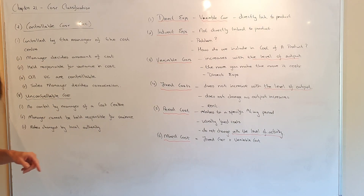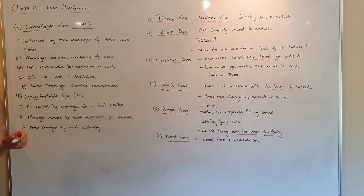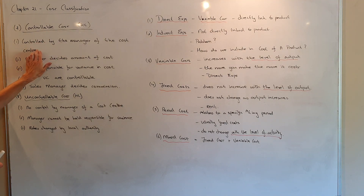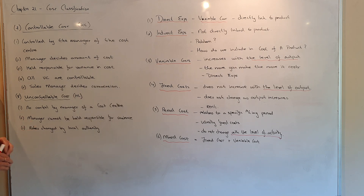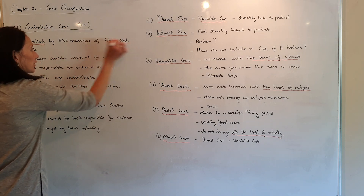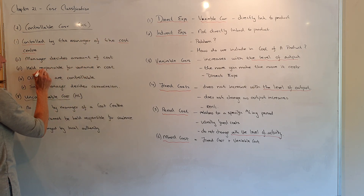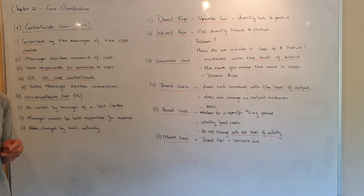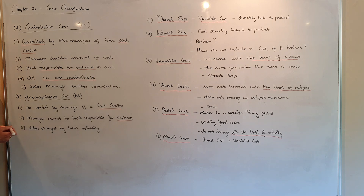Number seven and number eight — these have been on the exam paper and they make sense with the word used. Controllable: if something's controllable, it means you can control the amount of the cost. It's controlled by the manager of the cost centre; the manager decides the amount and will be held responsible for any variance. All variable costs are controllable — for example, the sales manager decides commission. A non-controllable cost is the opposite: they cannot be controlled by the manager of a cost centre, and the manager cannot be held responsible for a variance. An example would be rates charged by the local authority — nobody has any say over those rates.